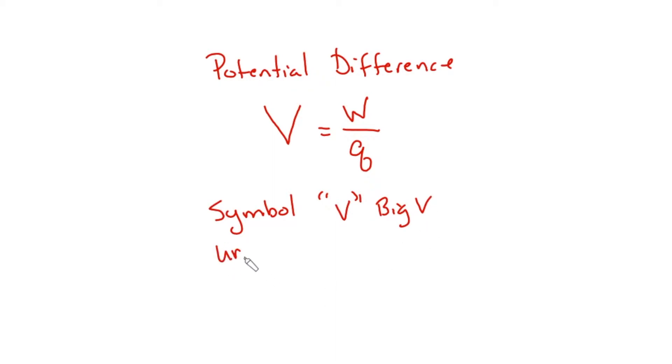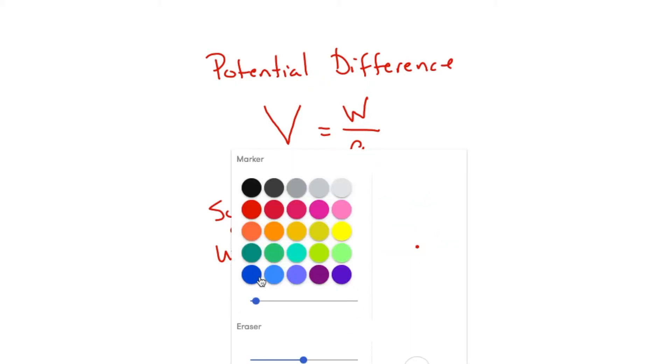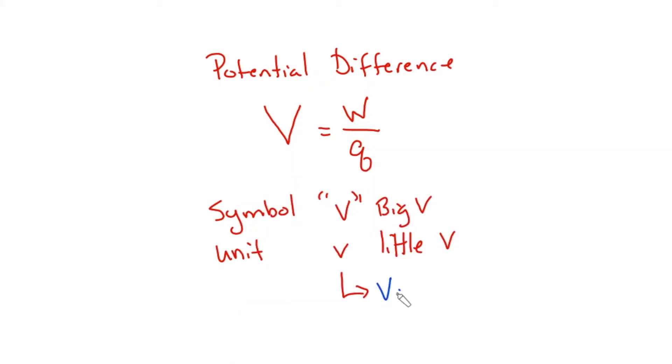The unit, and this is where things can get a little bit confusing, is little v. And this is called, a word that you've heard before, a volt. So we have to be careful that we don't confuse capital V, potential difference, with a volt. Don't confuse this word that you hear all the time, voltage. Voltage means potential difference.